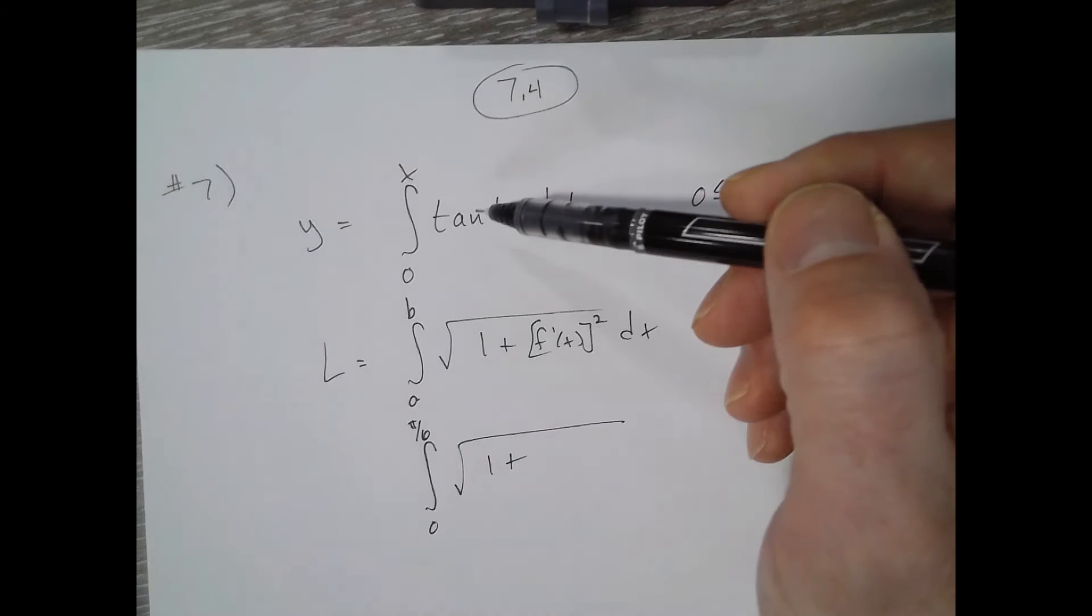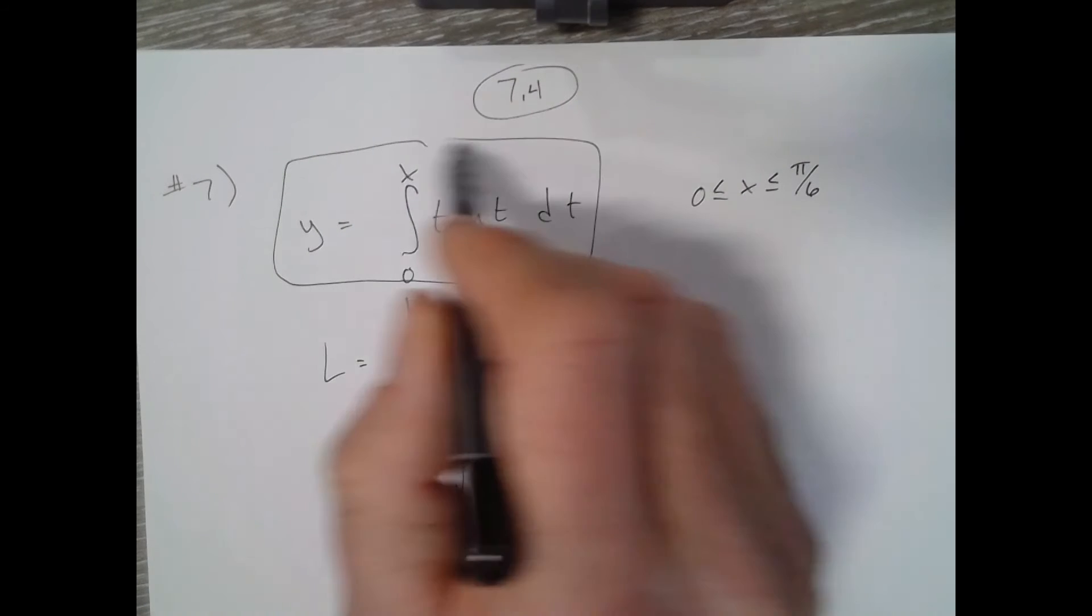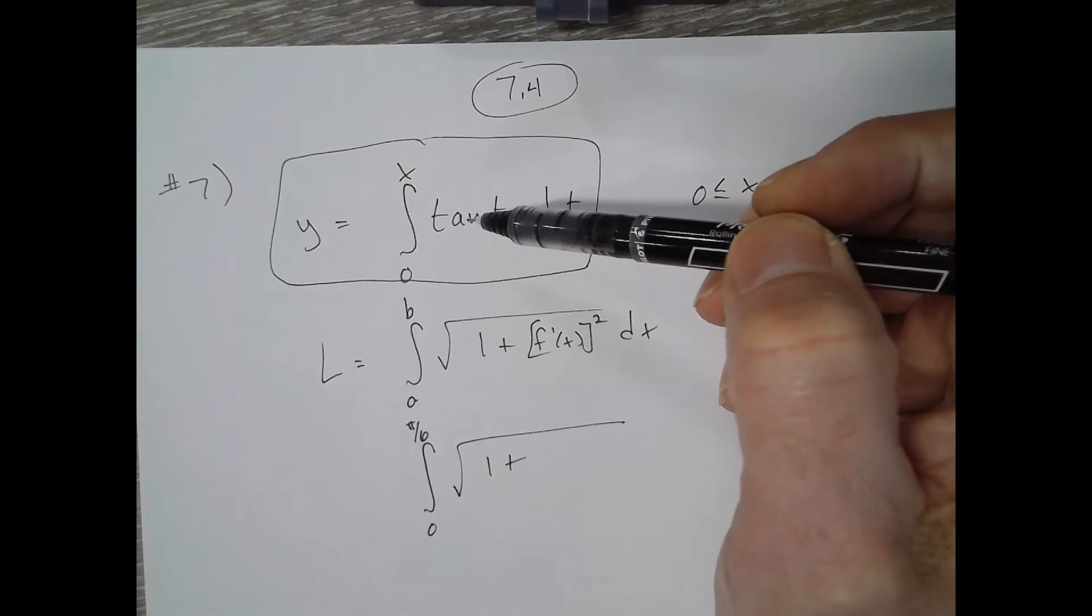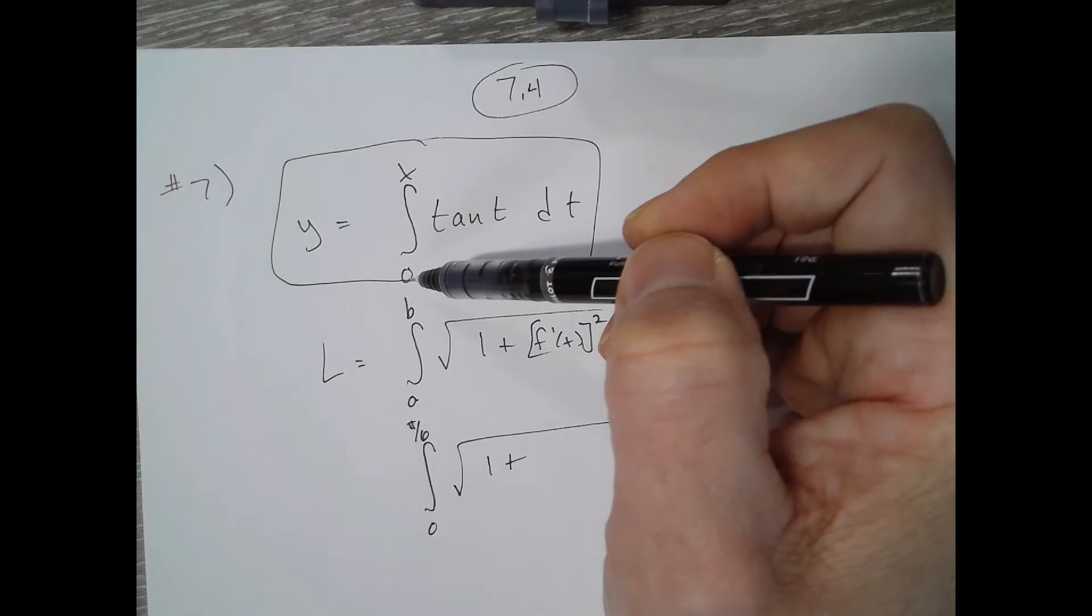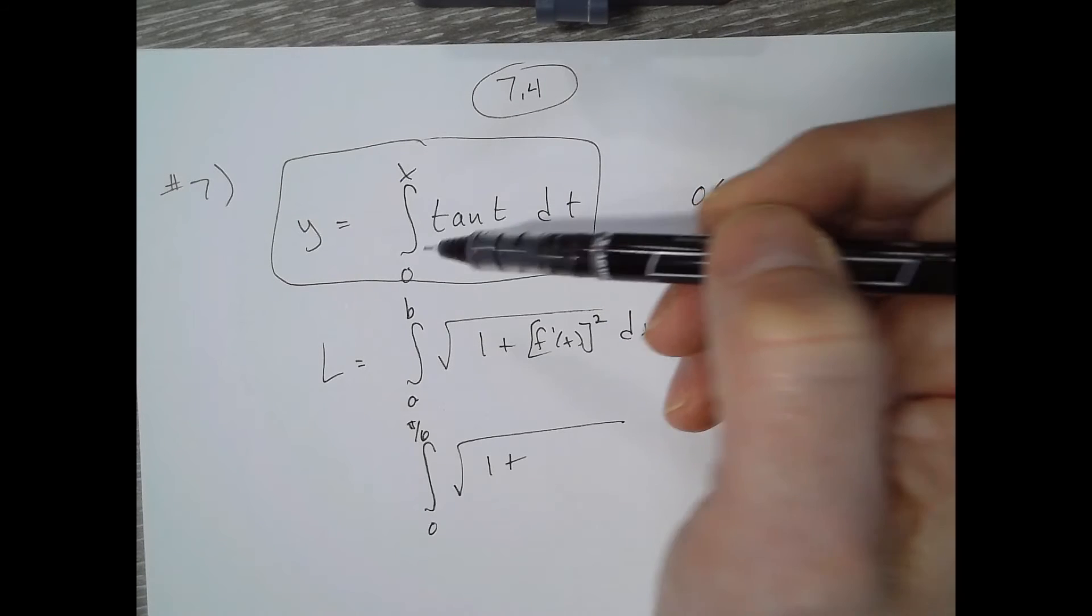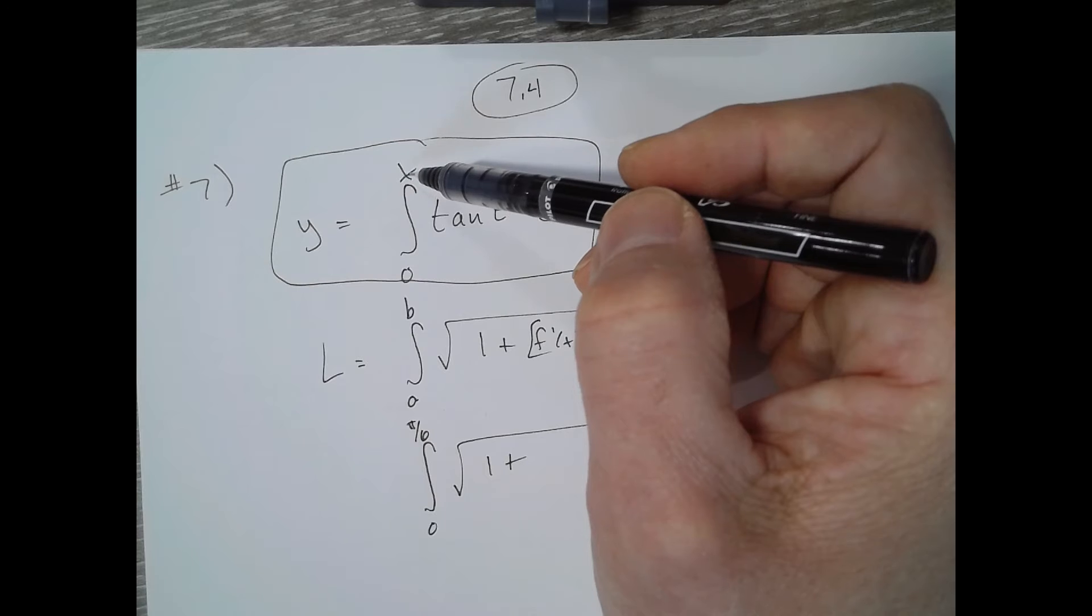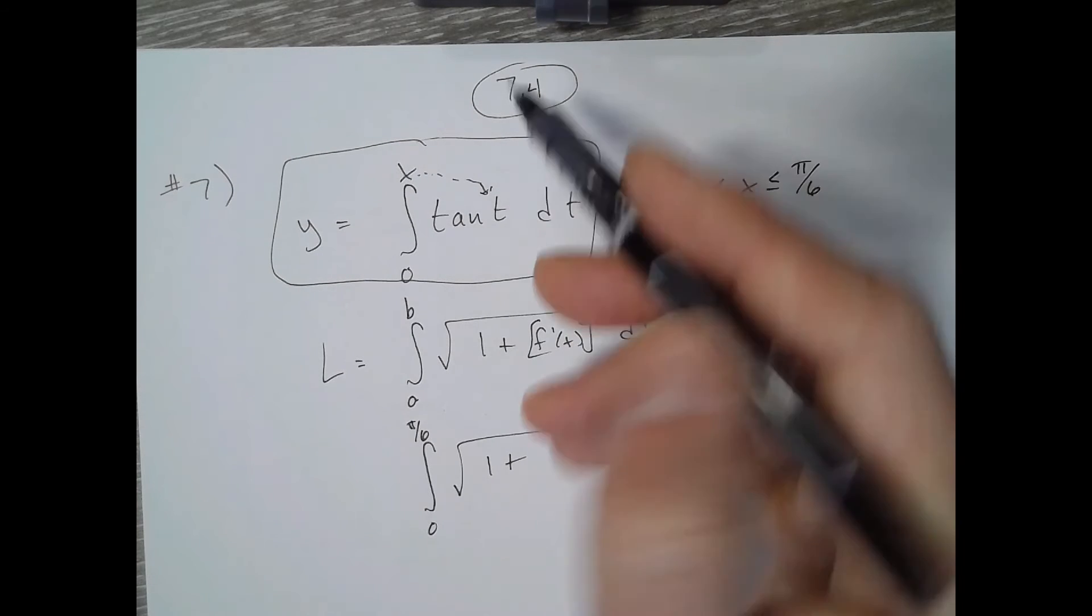The derivative of y—this is what y is right here—so the derivative would require fundamental theorem part 1, where you find the derivative of an integral. Since the bottom is a constant, we don't have to worry about it. Since the top is just x, we can just drop that x in for t, so we get tangent x.